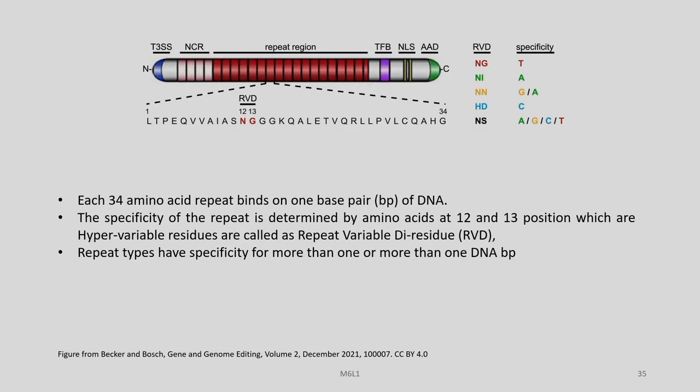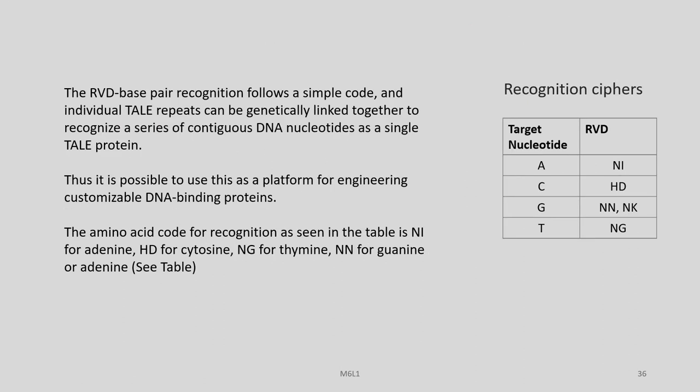Each of these 34 amino acid repeats binds to one base pair of DNA. The specificity of these repeats is determined by the amino acids at positions 12 and 13, which we refer to as repeat variable di-residue (RVD), and the repeat types have specificity for one or more DNA bases. This is basically the kind of RVD against which specificity of the DNA base is listed — we will come to these again.